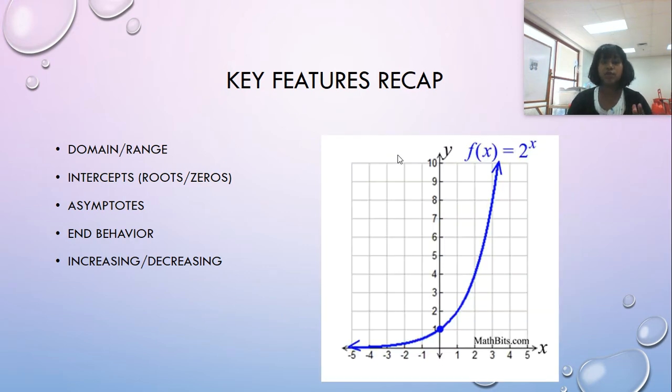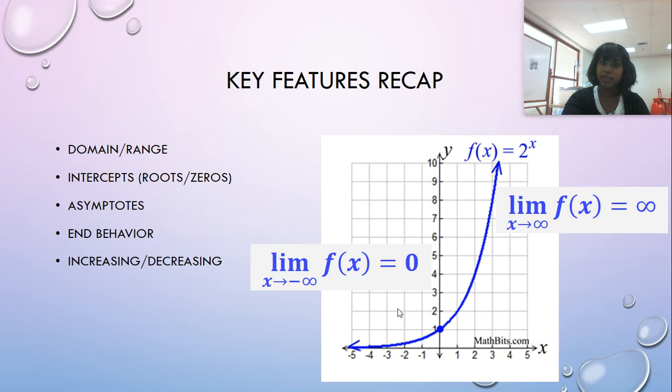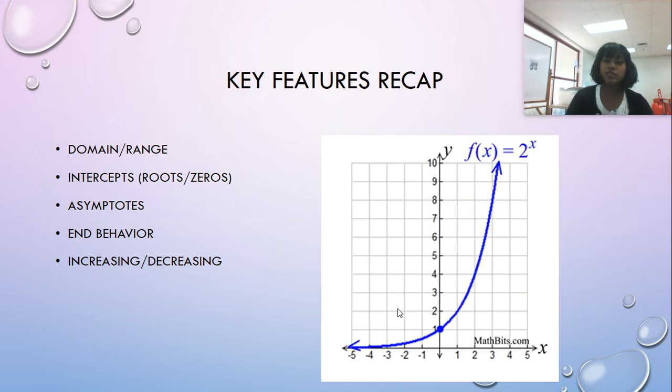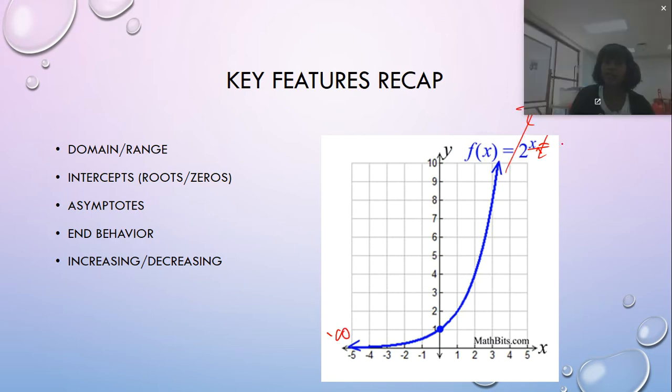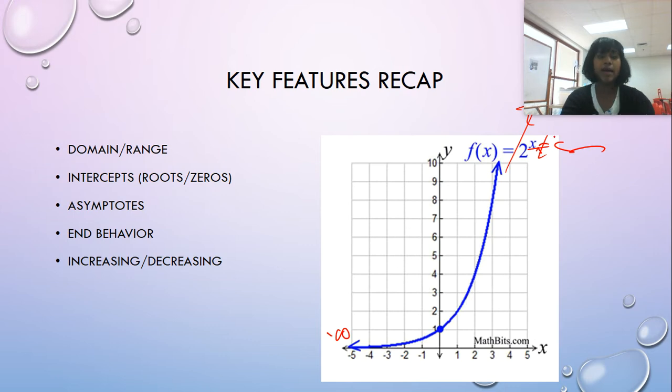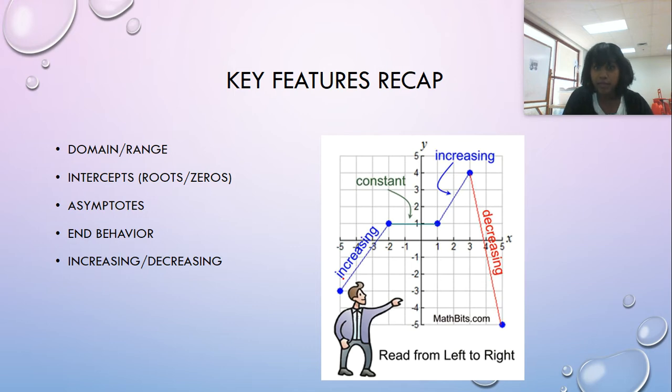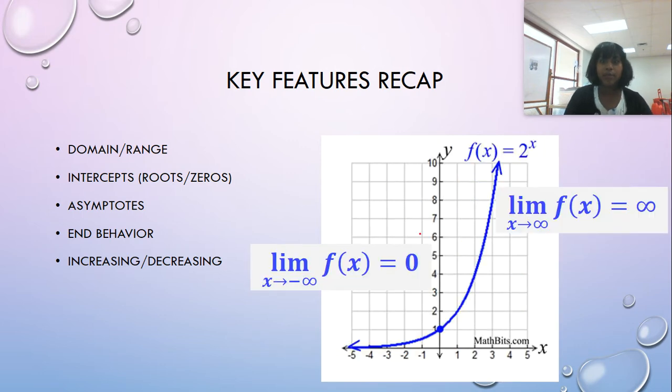And finally, if a function has an increasing or decreasing behavior, this one is very clearly increasing. We would describe the interval that this function is increasing over from left to right. This function is increasing from negative infinity all the way to positive infinity. And so that's how we would describe increasing, decreasing. On this one, I am increasing from negative five to negative two. I'm constant from negative two to one. I'm increasing from one to three and decreasing from three to five. And so that's how you would write your intervals.